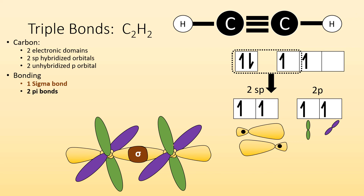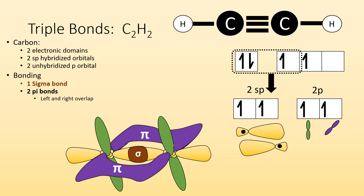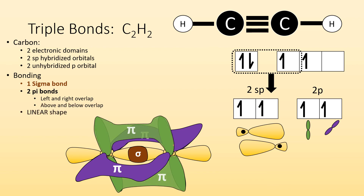But now these p orbitals that aren't hybridized and have an electron in them can overlap and form pi bonds. So we end up with two pi bonds — left-to-right overlap of one unhybridized p orbital with the other, and then an above-and-below overlap. Overall, the shape of the molecule is going to be linear.